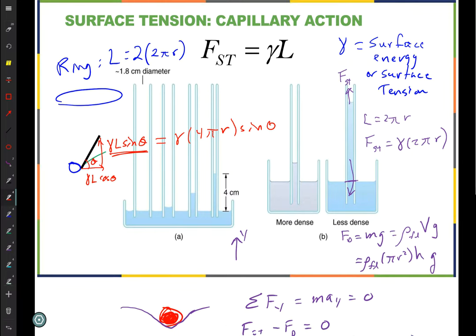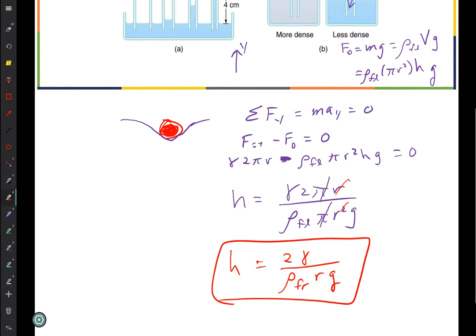The height is equal to 2 gamma over density of the fluid radius times g. So the height that I'm going to have for that column, I can calculate based on the radius of the tube. The bigger the radius, the lower the height. And on the density of the fluid, and on the surface tension. I wanted to cover that from the last class period.